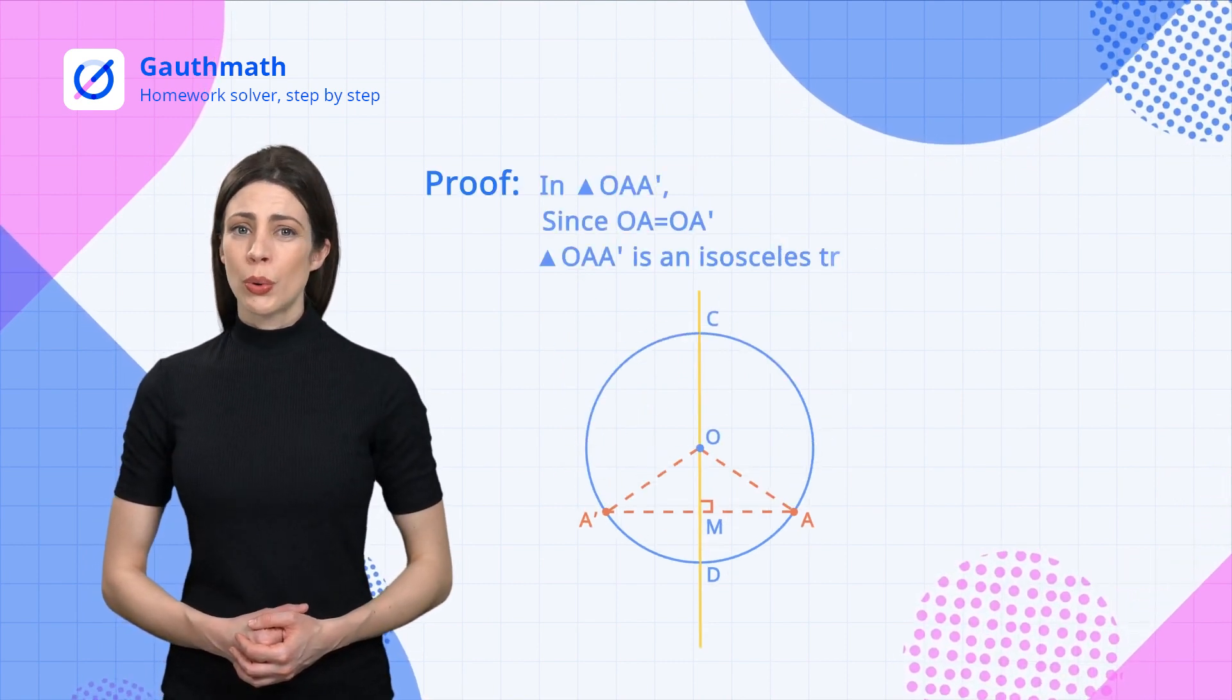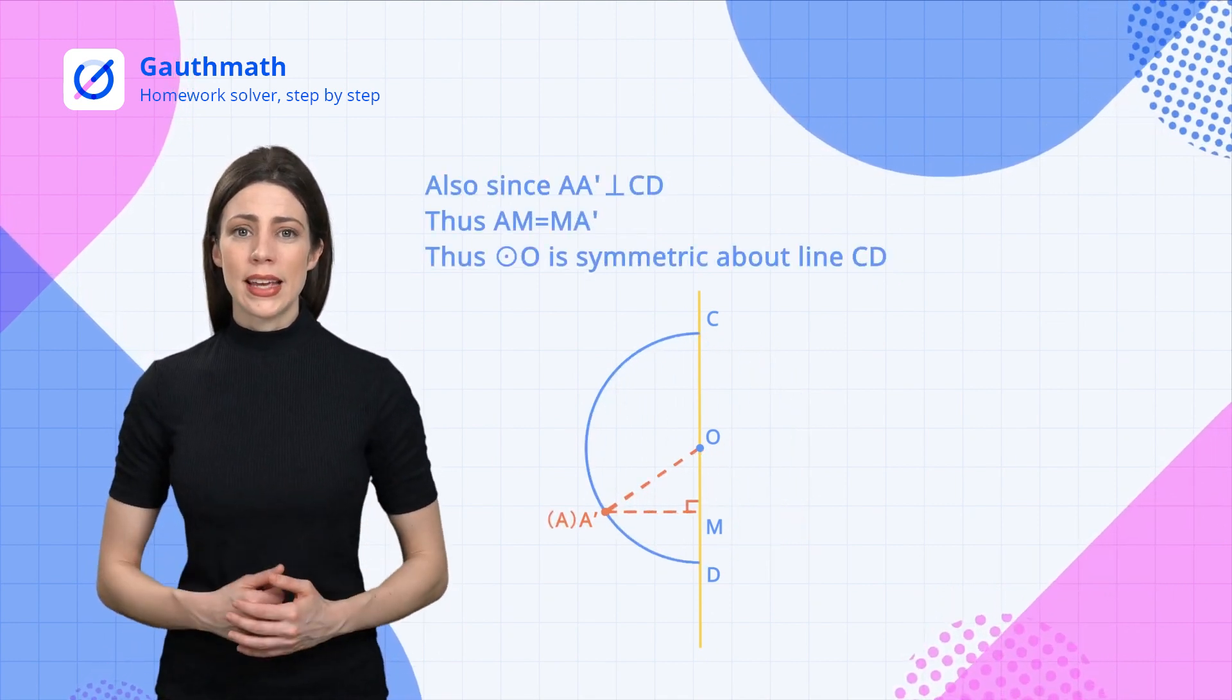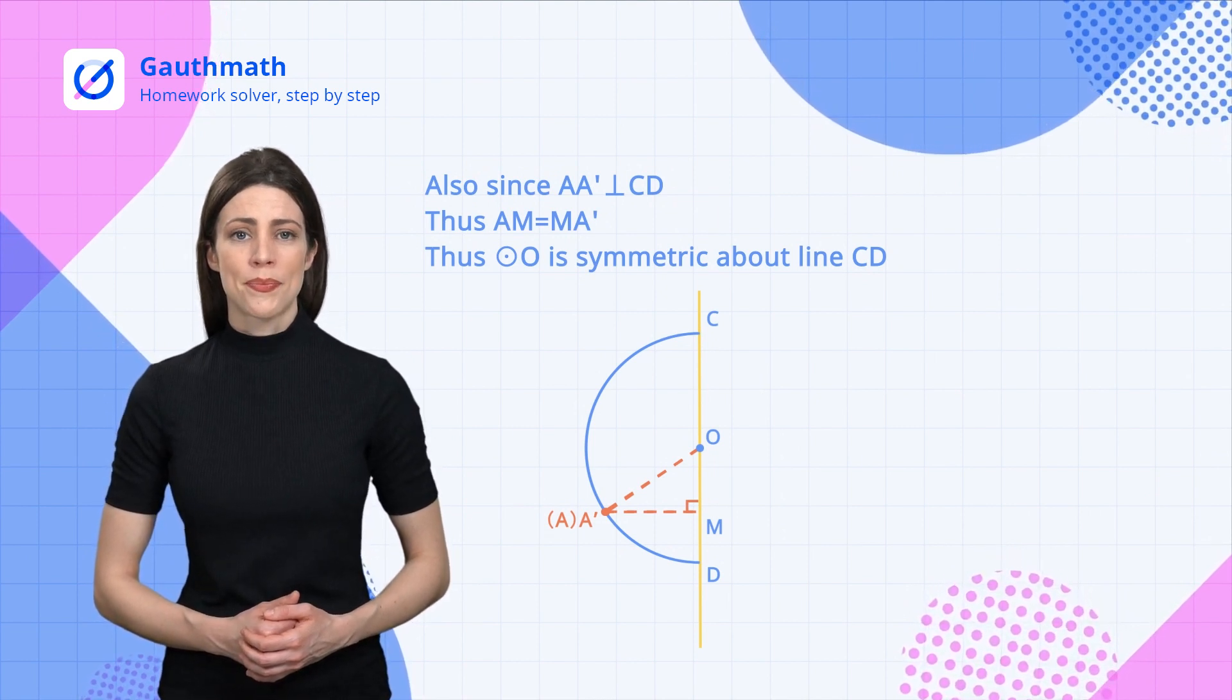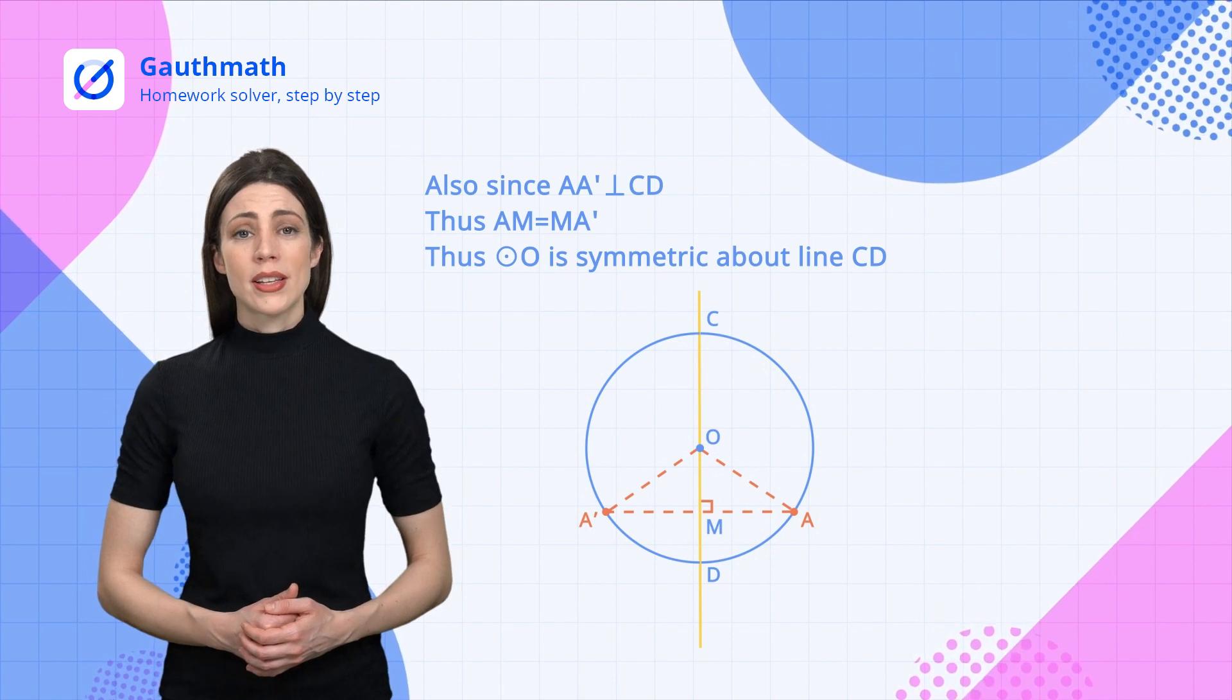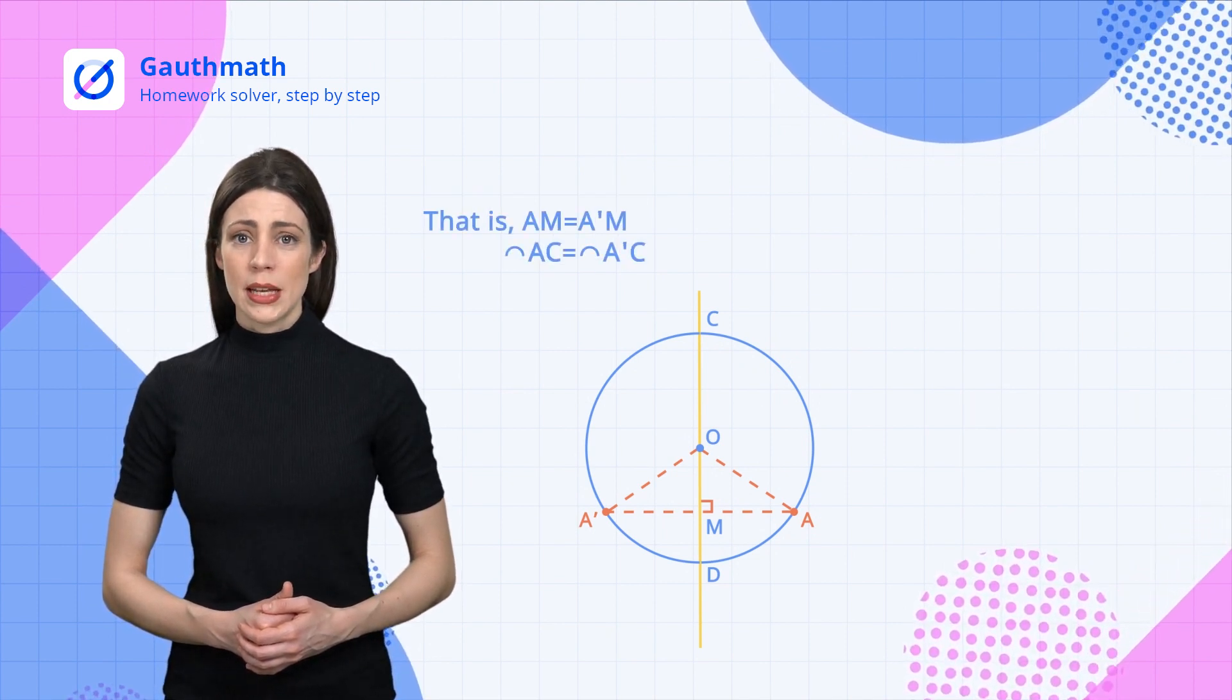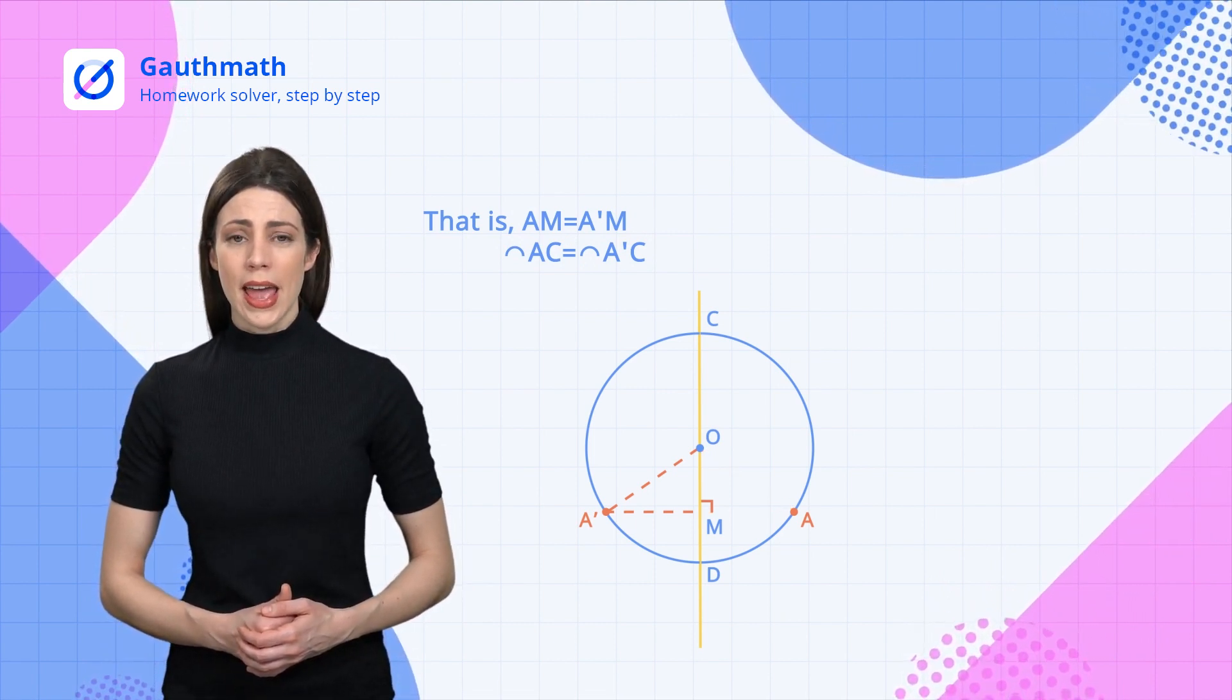According to the shown proof, points A and A' are symmetric. If we fold the circle with respect to CD, point A coincides with A' while segment AM coincides with A'M. Arc AC and arc AD coincide with arcs A'C and A'D respectively. That is, the diameter CD bisects the chord AA' and its arc AA' and arc ACA'.